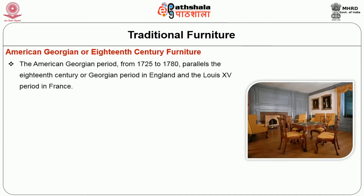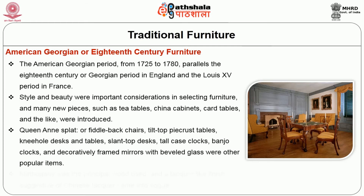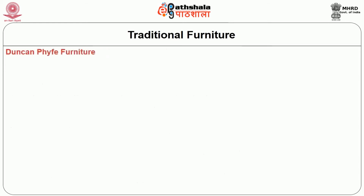American Georgian or 18th century furniture: the American Georgian period from 1725 to 1780 parallels the 18th century Georgian period in England and the Louis XV period in France. Style and beauty were important considerations in selecting furniture, and many new pieces such as tea tables, china cabinets, and card tables were introduced. Queen Anne splat or fiddle-back chairs, tilt-top pie crust tables, kneehole desks, slant-top desks, tall case clocks, banjo clocks, and decoratively framed mirrors where beveled glass were other popular items. Mahogany was the principal wood used, and a lacquer-like finish suggestive of Chinese lacquer came into use.